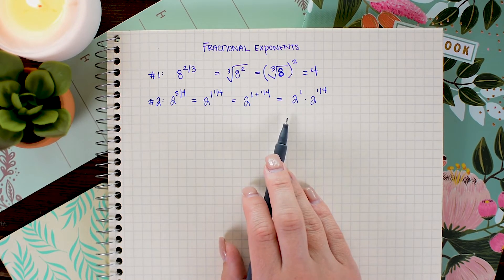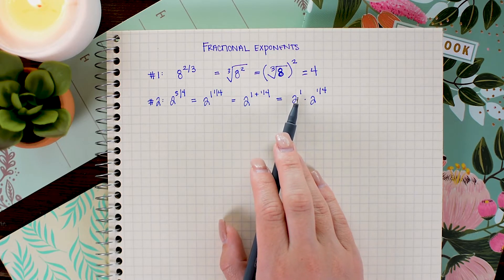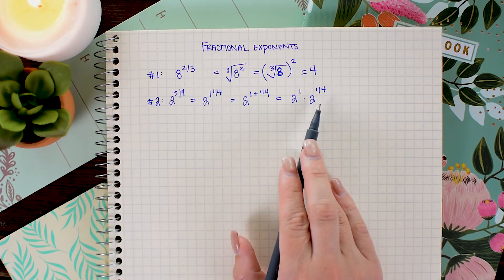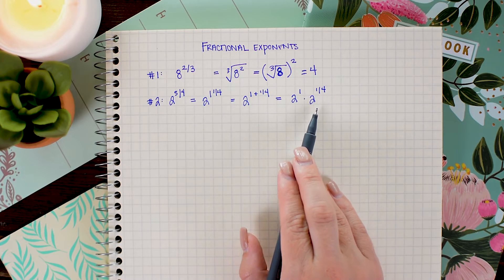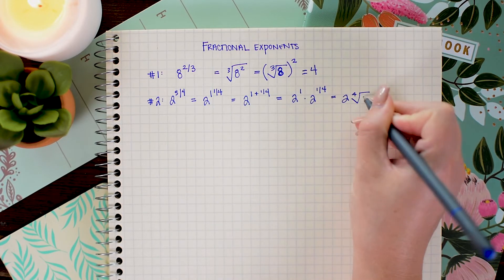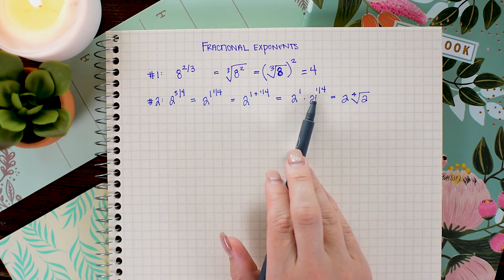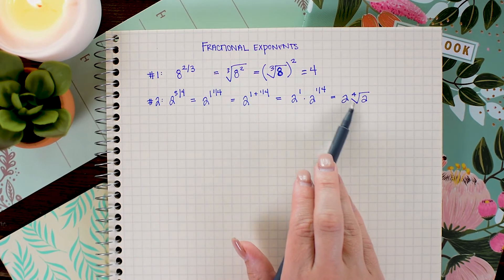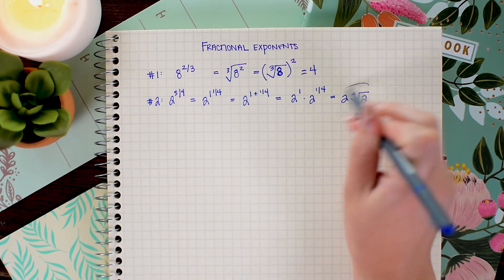And then I have simplified this really nicely because I can go ahead and lose the power of 1 on the 2, and then I can go ahead and rewrite it in radical notation to clean this up a bit. There you go. And again, I don't need to write the powers of 1 because they're implied, so I just get 2 times the fourth root of 2. Nice and simplified.